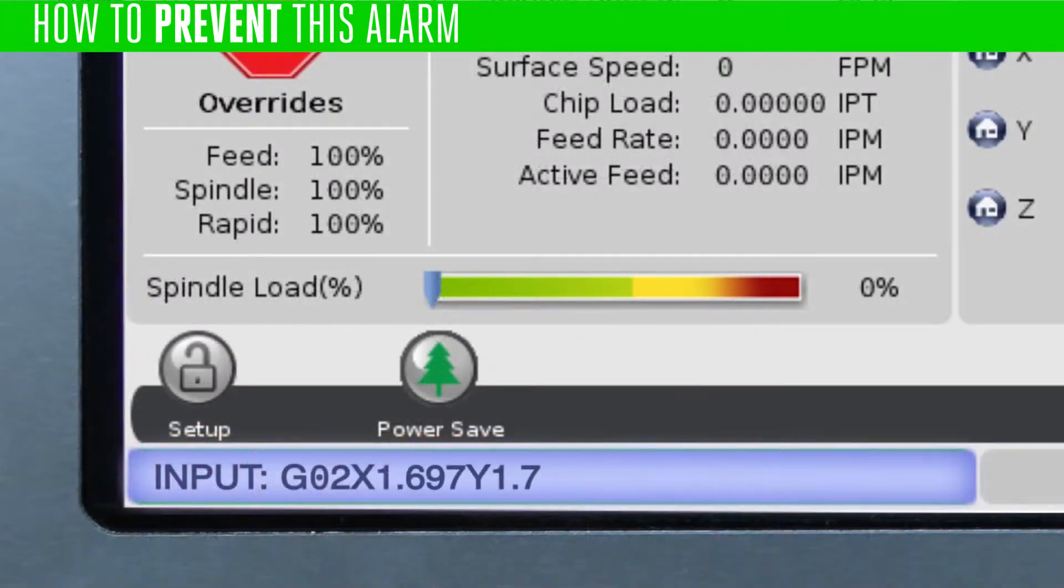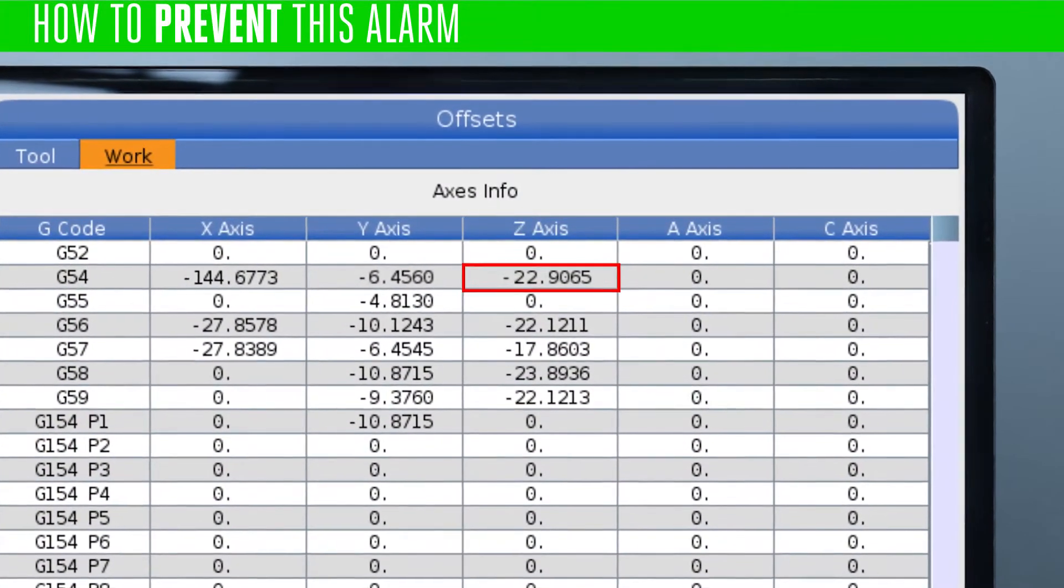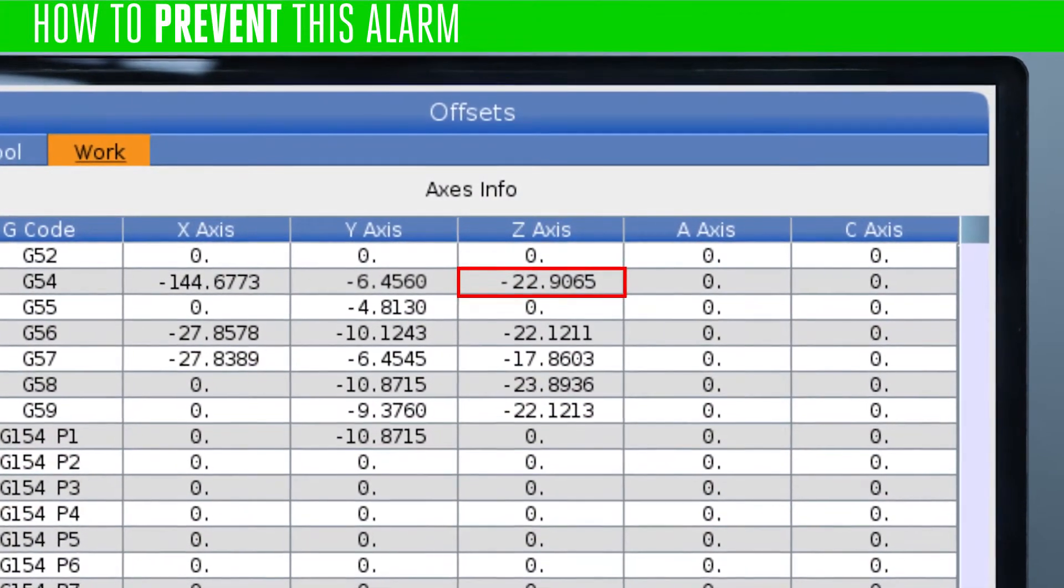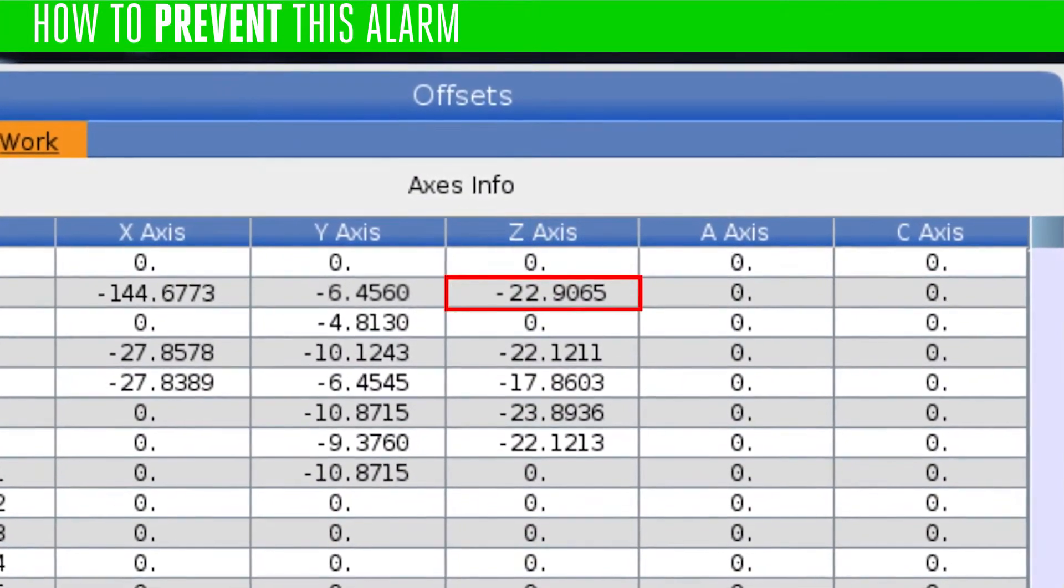Review the program itself for errors. Next, make sure that your offset values are correct. If an offset has incorrect values, you might be trying to send the machine to a location that is physically correct, but out of the machine's envelope according to the offset.